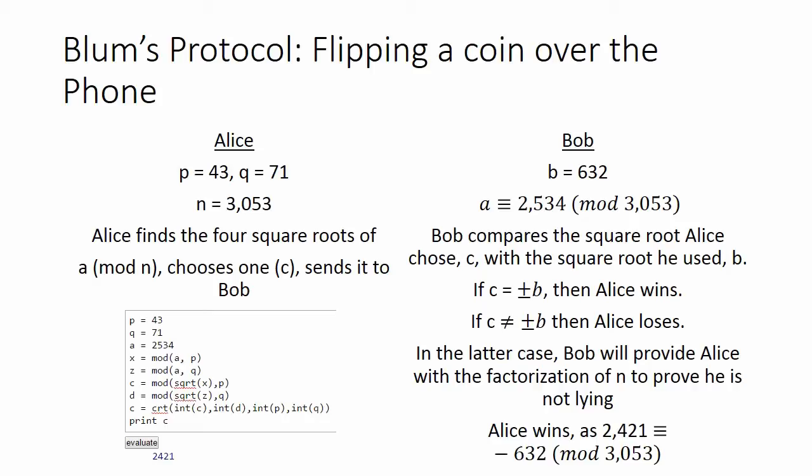If c is not congruent to plus or minus b modulo n, then Bob wins. He would have to prove he won by using the other square roots of a mod n that Alice will have provided to find the factorization of n.